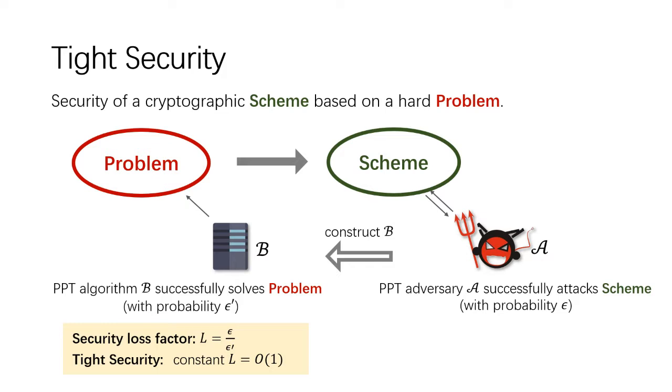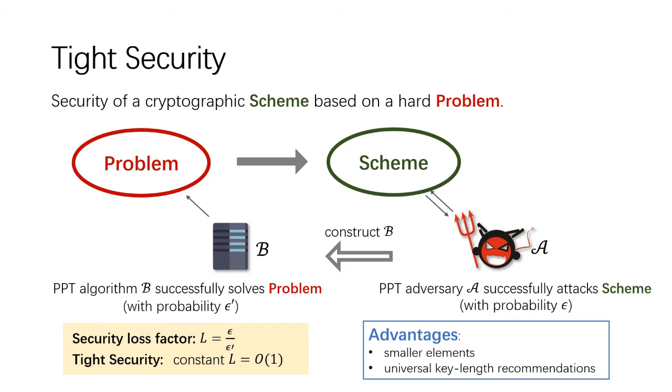If L is a constant, then the reduction is tight. A scheme with tight security has smaller parameters and more efficient key length recommendations. That's why many cryptographic schemes pursue tight security recently.